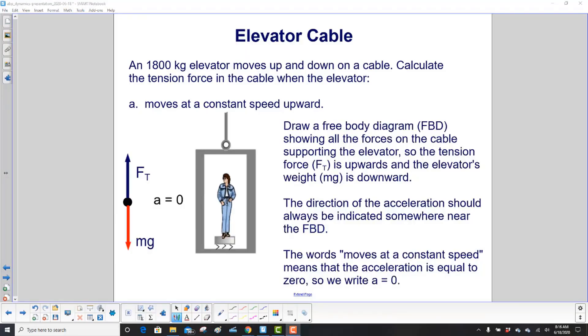The first thing you do is draw a sketch. What's our object of interest? The elevator. Draw a free body diagram showing all the forces on the cable that supports the elevator. We have tension force upward provided by the cable, and the elevator's weight mg downward. Also add the direction of the acceleration somewhere near the free body diagram. In this case there is no acceleration, so write a = 0. The phrase 'moves at a constant speed' means the acceleration is equal to zero.